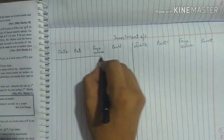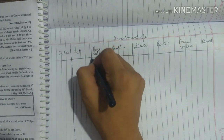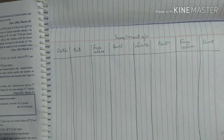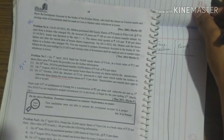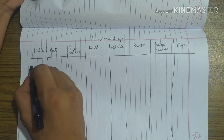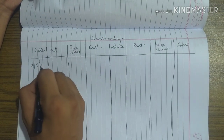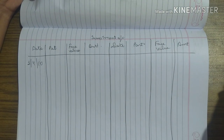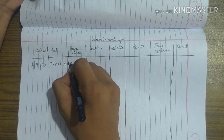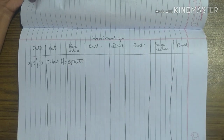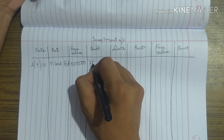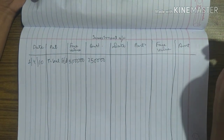On 1st April, Rajat has 50,000 equity shares of face value 10 each, so 50,000 × 10 = 5,00,000 in face value. At a book value of 15 each, 50,000 × 15 = 7,50,000. This is the opening balance entered on the debit side of the investment account.